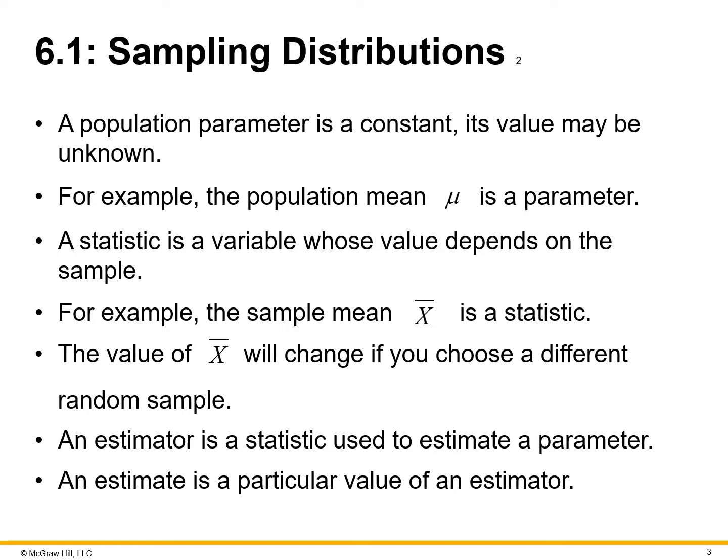If you take a different dataset or group — for example, in marketing analytics looking at different customer groups — customer group A versus B and C may have different variables and different values. So as we change those random distributions or groups in the analysis, so does our statistic or overall insight. An estimator is a statistic used to estimate a parameter. An estimate is a particular value of an estimator. We are making estimates to ensure we have the best plausible outcome or decision based on the data.